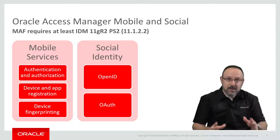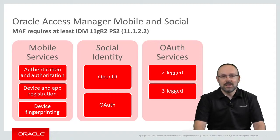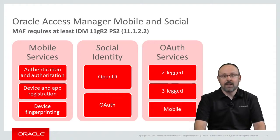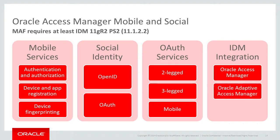The third part of the feature set is OAuth services. Not only does OAMMS integrate with third-party providers — it can also act as an OAuth identity provider itself. It can manage two-legged and three-legged authorizations and will provide enhanced security if the client is a mobile application. And finally, we have IDM integration. OAMMS integrates with other IDM products in Fusion Middleware such as Oracle Access Manager and Oracle Adaptive Access Manager. It can also use a wide array of LDAP servers as user directories. Please note you will need at least IDM 11G Release 2 Patch Set 2 in order to support MAF applications properly.